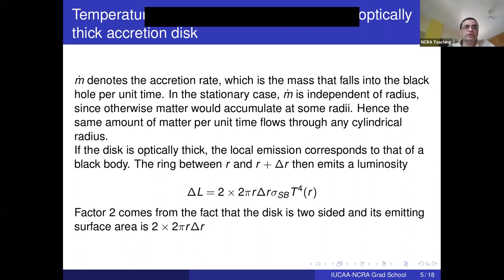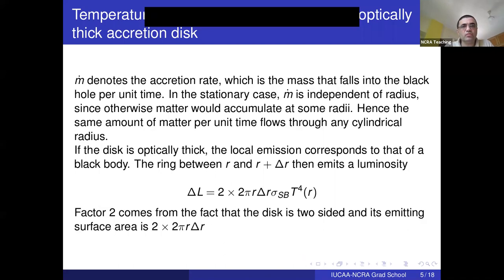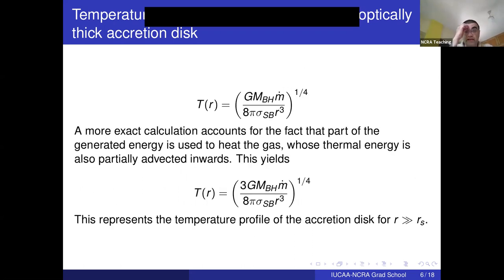You can rewrite the equation by equating the expression for δL from the energy dissipation to the Stefan-Boltzmann emission expression and rearranging terms to get the temperature profile. We've made some approximations here, and people have done more exact calculations both analytically and through numerical simulations.